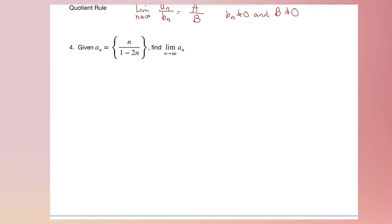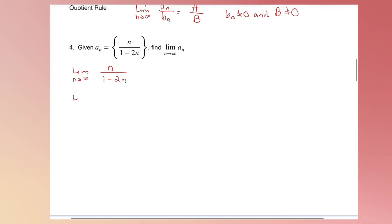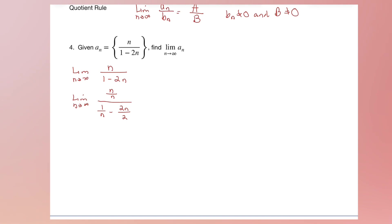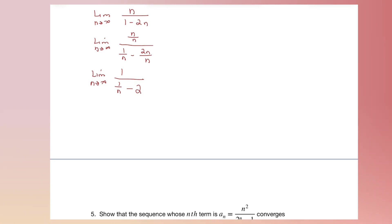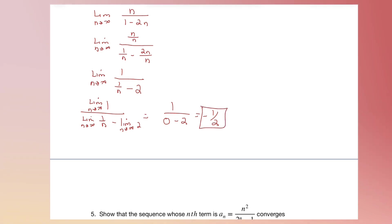Let's use these properties. For A sub n equals n divided by (1 minus 2n), find the limit as n goes to infinity. We set up the limit and divide every term by n, rewriting it as 1 divided by (1/n minus 2). Now we can apply limit properties and split the limits: the limit of 1 over the limit of (1/n minus 2). The limit of 1 is 1, the limit of 1/n is 0, so the answer is 1 divided by (0 minus 2), which is negative 1/2.